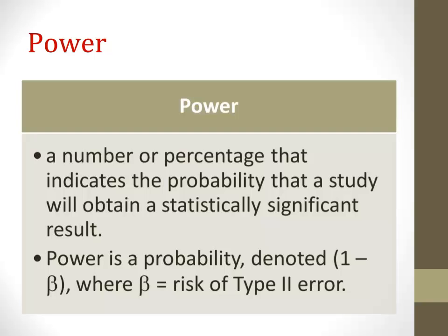In other words, it's the probability that your results will be statistically significant when they're supposed to be. Oftentimes what we see is that power is denoted here as 1 minus beta, where beta is equal to the risk of the type 2 error.